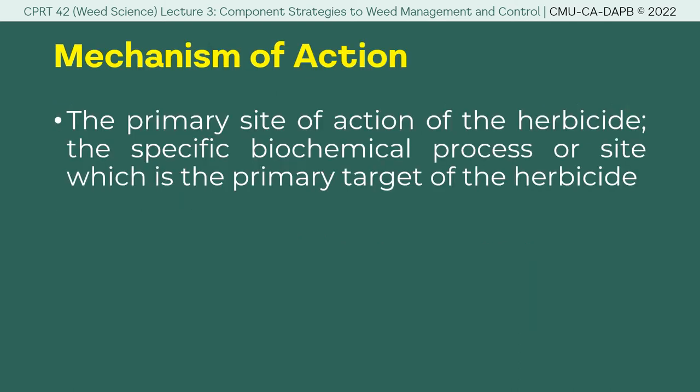Mechanism of action, on the other hand, is the primary site of action of the herbicide. It is the specific biochemical process or site which is the primary target of the herbicide. This mechanism of action usually happens at the site of action, and we will try to track and locate the chain of events, highlighting the target site of the plant when we apply our herbicides.